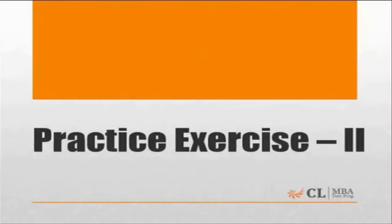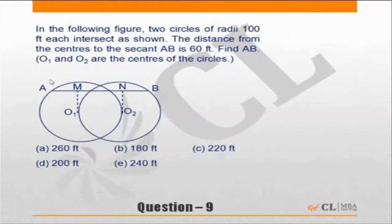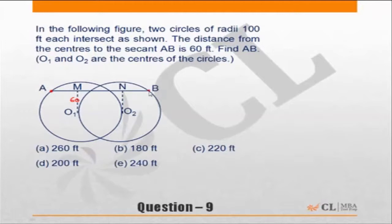We are starting with practice exercise 2. In the following figure, two circles of radii 100 feet each intersect as shown. The distance from the center to the secant AB is 60 — that means this dimension O1M is given as 60. We need to find AB, and we have the radius as 100.